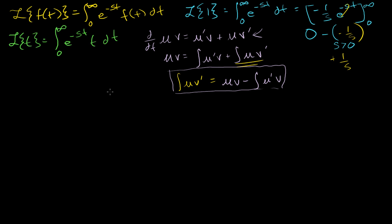To apply integration by parts, it's good to define v prime as something easy to take the antiderivative of, and u as something easy to differentiate. So let's set u equal to t and v prime equal to e to the minus st. Then v is just the antiderivative of e to the minus st, which is minus 1 over s times e to the minus st. And u prime, the derivative of t, is just 1.